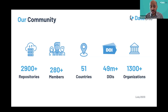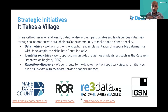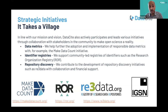We have more than 2,900 institutional repositories connected with us, more than 280 members from 51 countries, around 50 million DOIs registered, and we collaborate with more than 1,300 research organizations around the globe. Regarding our strategic initiatives, we play an active part in community initiatives and collaborate with different stakeholders to make open science a reality. For data metrics, we help adoption of responsible data metrics through our Make Data Count initiative. We support community-led registries such as ROR (Research Organization Registry), and we contribute to the development of repository discovery initiatives such as the Re3Data project.